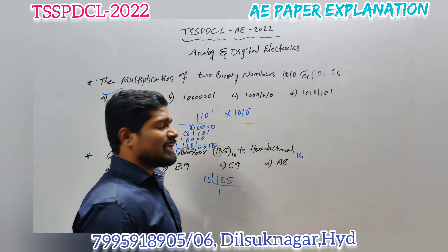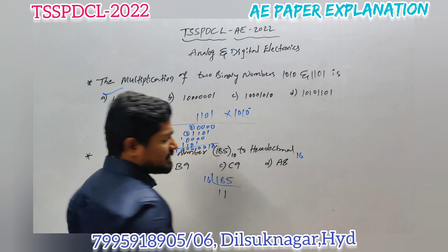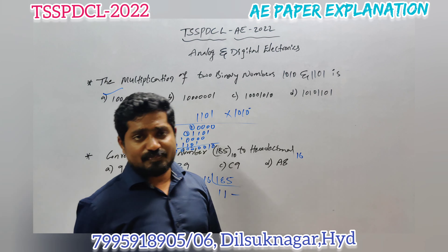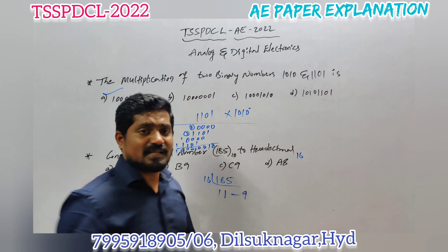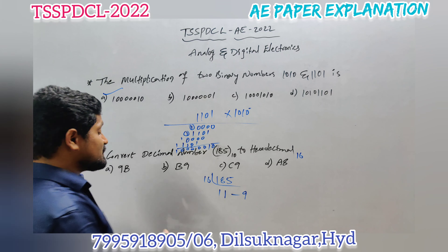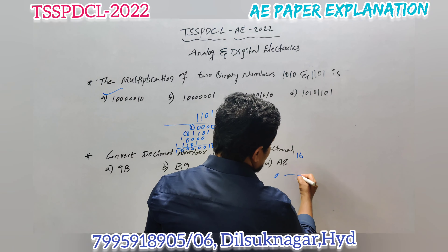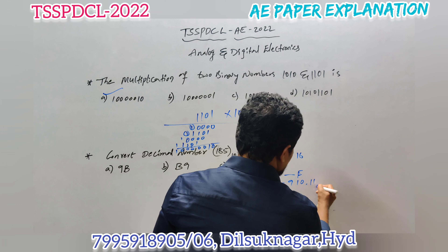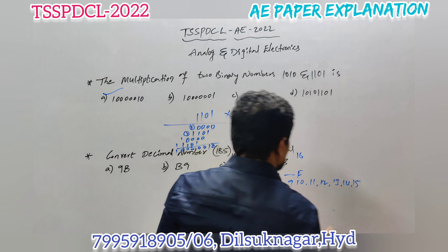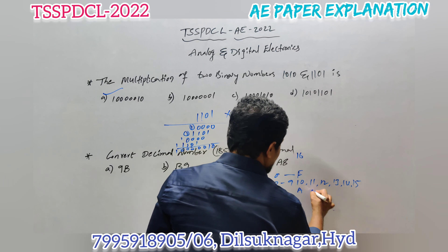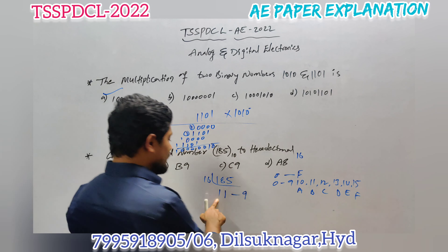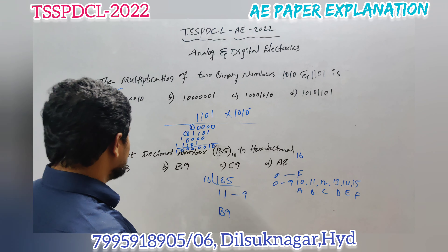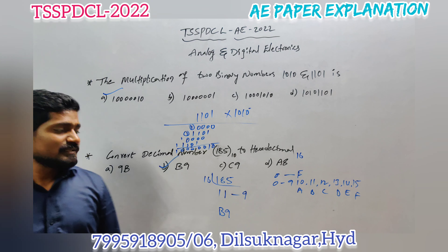Dividing 185 by 16 gives 11 with a remainder of 9. The remainder is 9, and in hexadecimal the values go from 0 to 15. Digits 0–9 stay as digits, and 10–15 are represented as A through F. Here 11 corresponds to B. So the answer is B9. These are the two basic questions from number systems in the TSSPDCL AE paper.